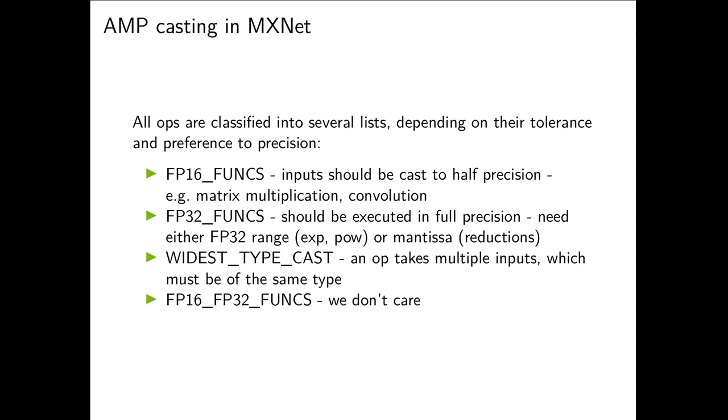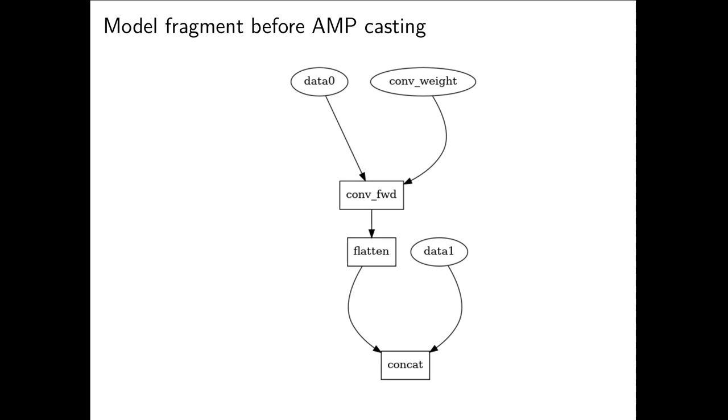Every operation in MXNet is classified depending on its precision requirement. FP16 funx list collects operations which actually benefit from their inputs being cast to FP16. FP32 funx loads operations. There's a set of operations that may not care as much about precision, but they take multiple inputs and those inputs need to be of the same type, simply for correctness reasons. And finally, FP16 FP32 funx list is out there only to ensure coverage, to make sure that every operator has been classified one way or another.